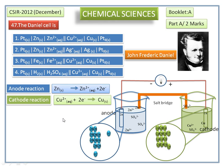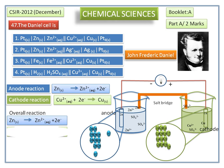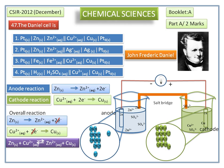The net reaction is obtained by adding the anode and cathode reactions. We have a common 2 electrons which we cancel out. We get the Daniell cell reaction: Zn(s) + Cu²⁺(aq) ⇌ Zn²⁺(aq) + Cu(s).